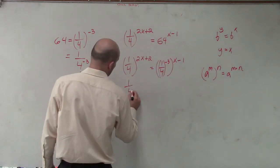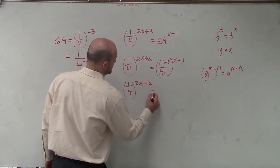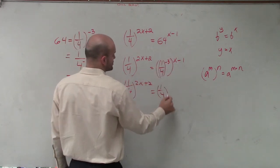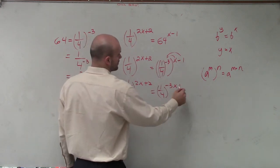So I have 1 fourth raised to the 2x plus 2 equals 1 fourth raised to negative 3 times x. It's going to be raised to negative 3x, and remember, you've got to apply the distributive property plus 3.